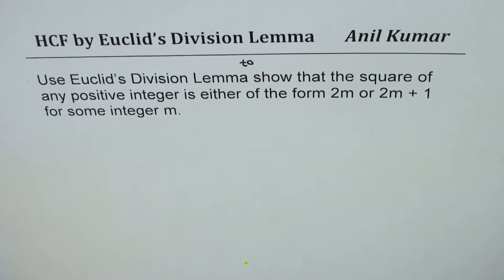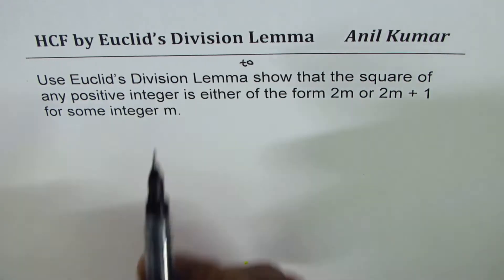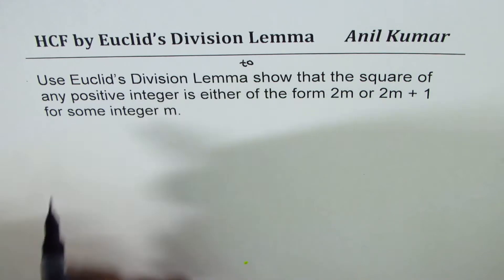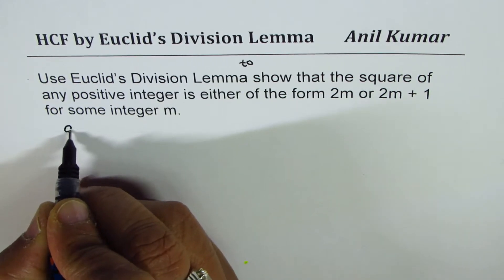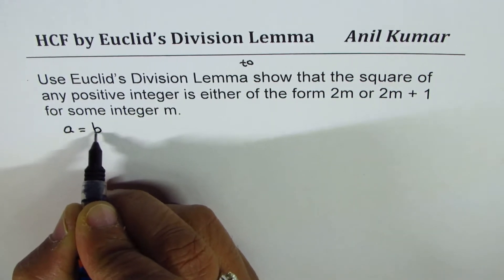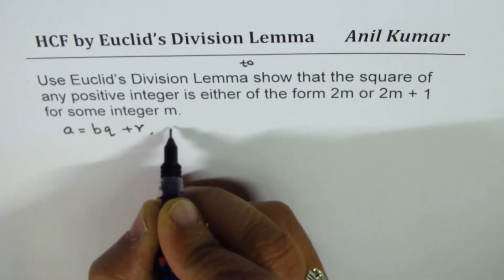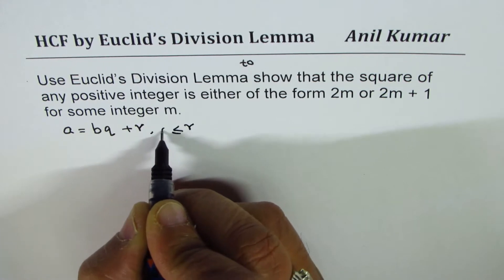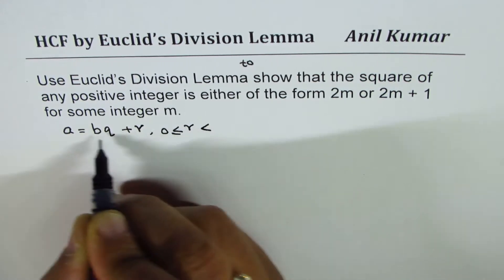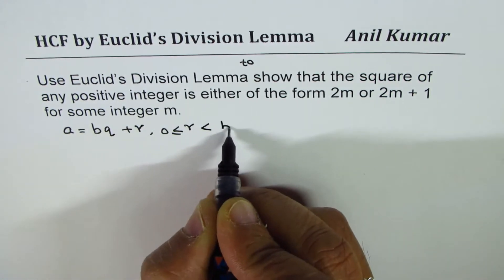Now let me begin with Euclid's division lemma, which states that a = bq + r, where r is greater than or equal to 0 and less than the absolute value of b.